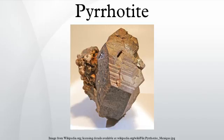One such structure is pyrrhotite 4C. Here, 4 indicates that ion vacancies define a superlattice that is four times larger than the unit cell in the C direction. The C direction is conventionally chosen parallel to the main symmetry axis of the crystal. This direction usually corresponds to the largest lattice spacing.